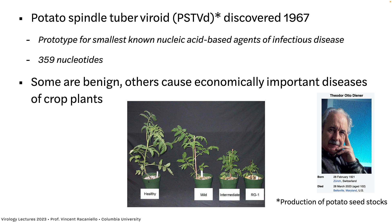He called them viroids because they weren't viruses — they had no protein coat. Some of these don't do anything to plants, and some cause economically important diseases of crop plants. You can see the tomato plant there: the healthy one, and then ones infected with viroids of different pathogenicity grow shorter and shorter. You have to be careful that you don't have viroids in your seed stocks. Monsanto, a big seed provider, has to make sure they're not giving farmers seeds with viroids in them. This would be disastrous.